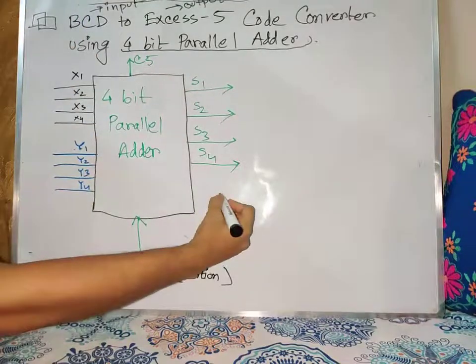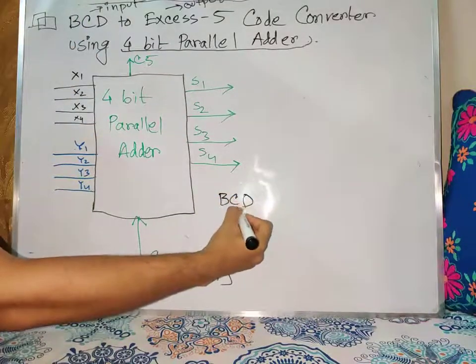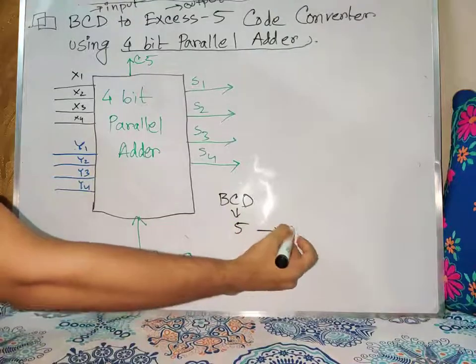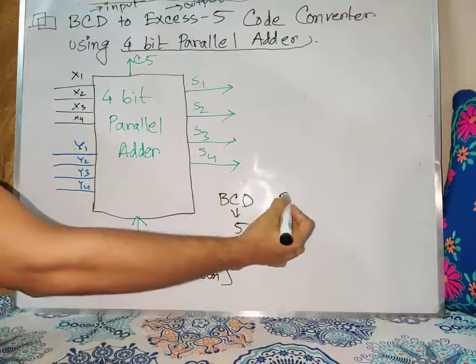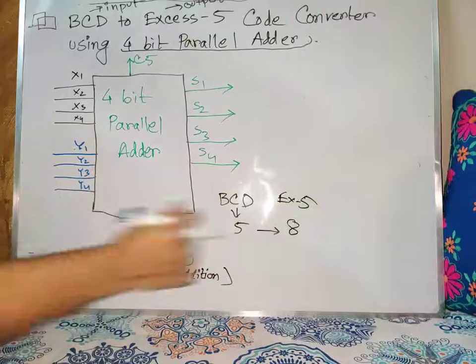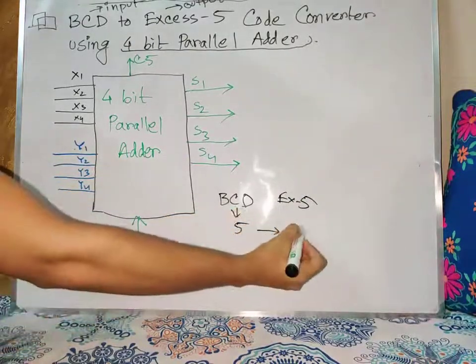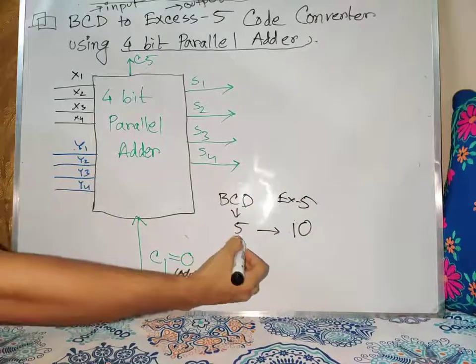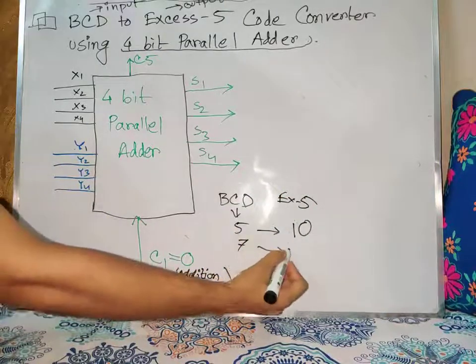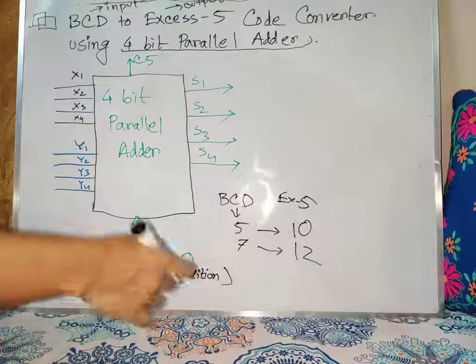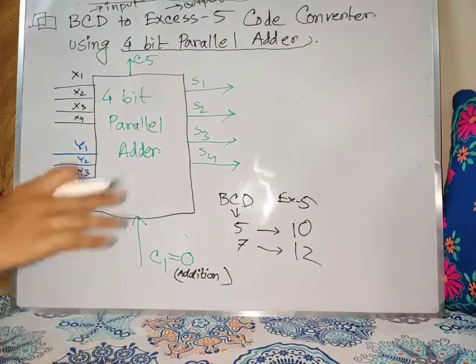Let's say for BCD, I have the number 5. Our output is XS5 which is 10. For BCD, I have the number 7. So the output is 12. This is binary, definitely. Our concept is: BCD is the input, XS5 is the output.